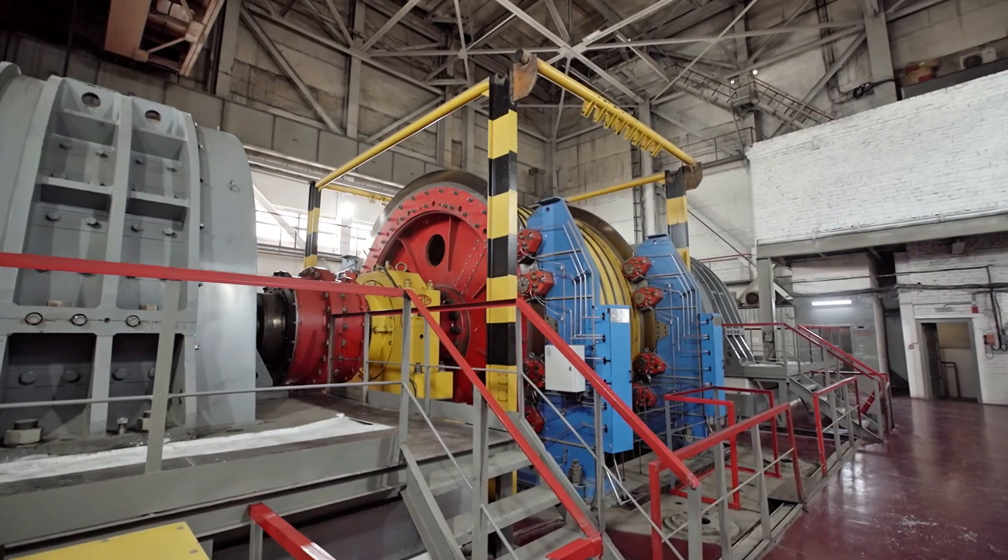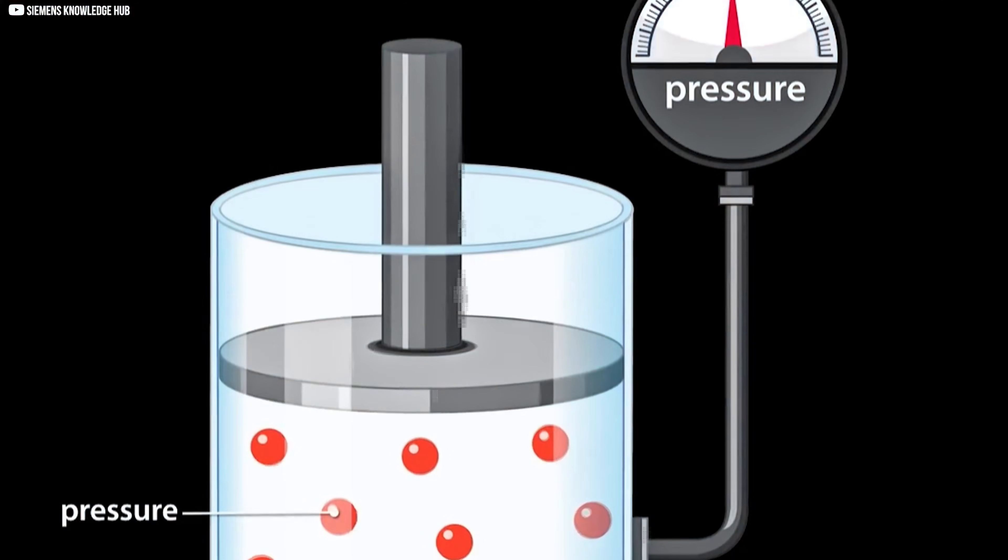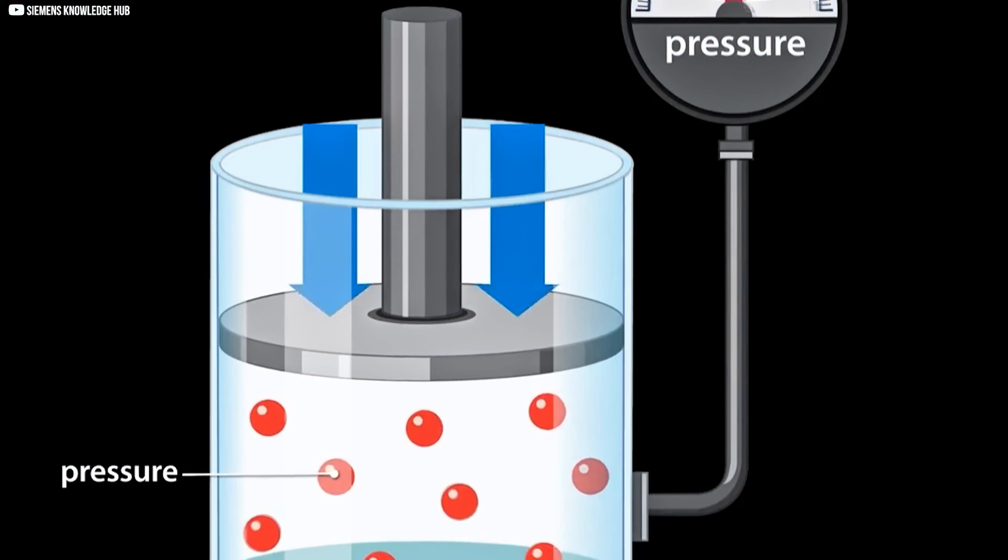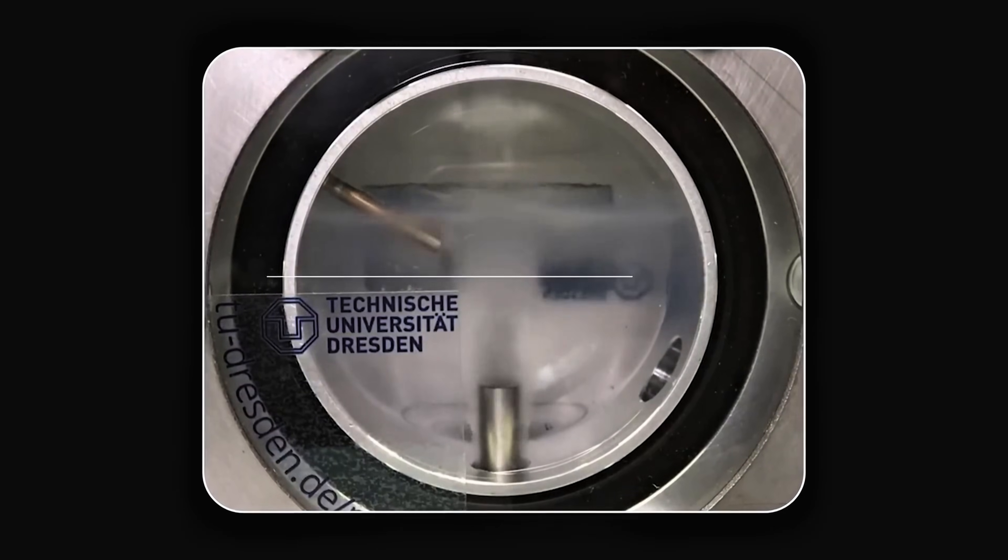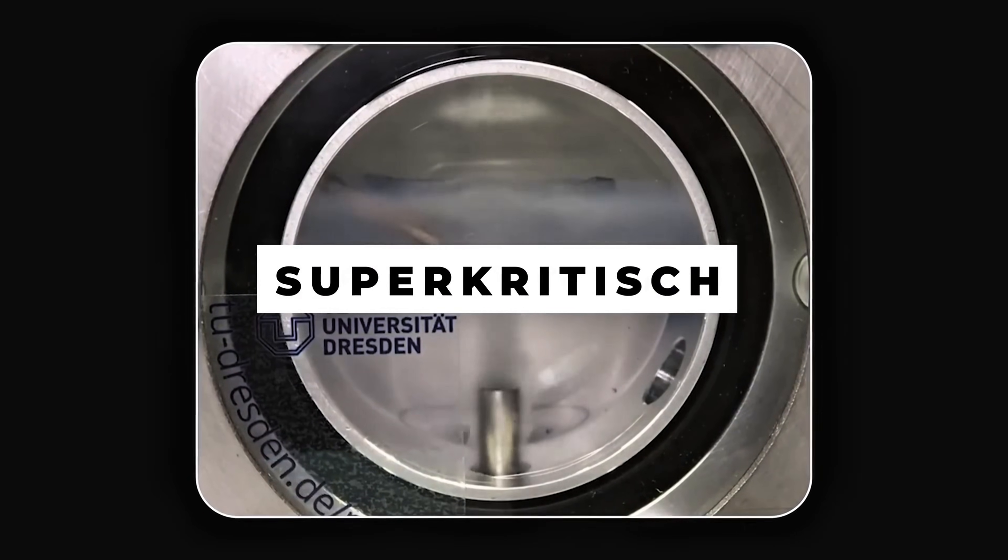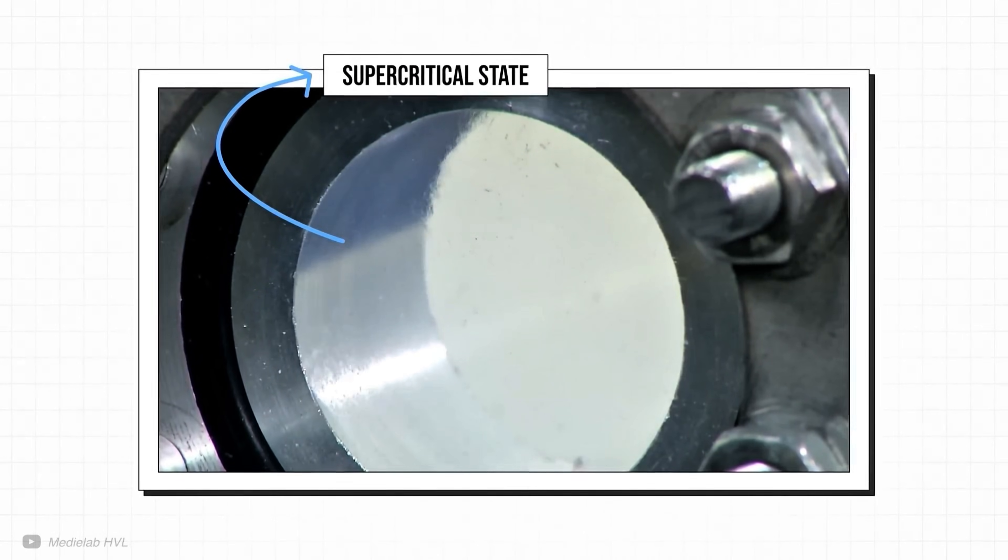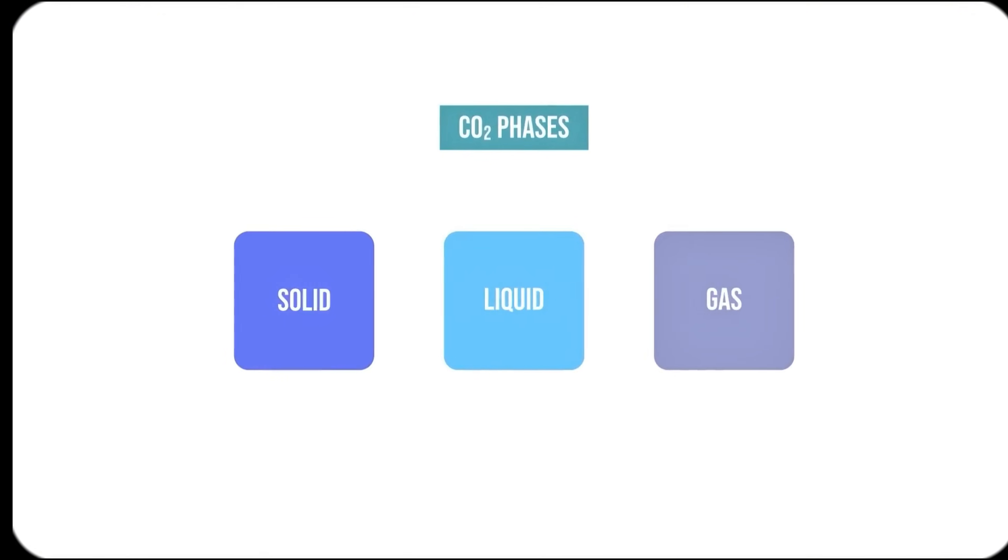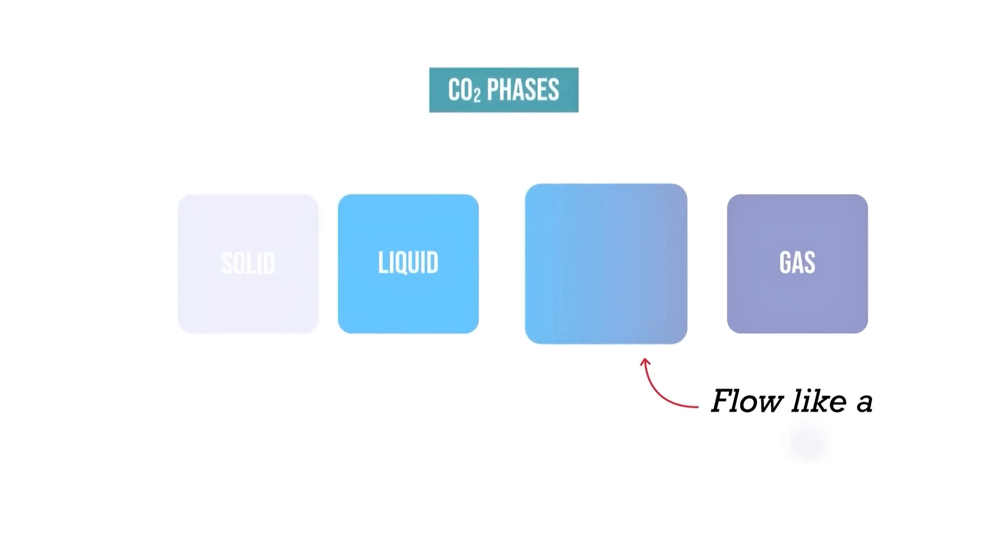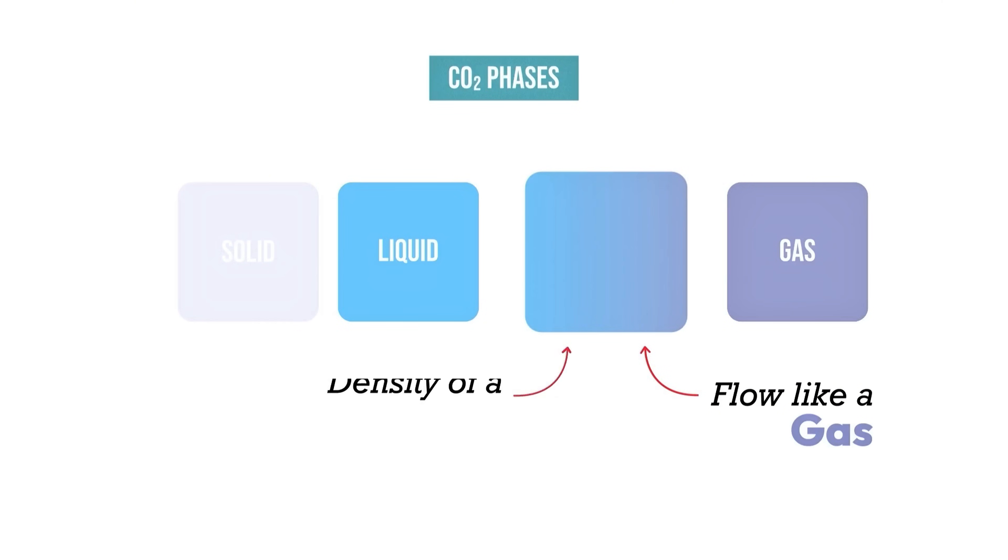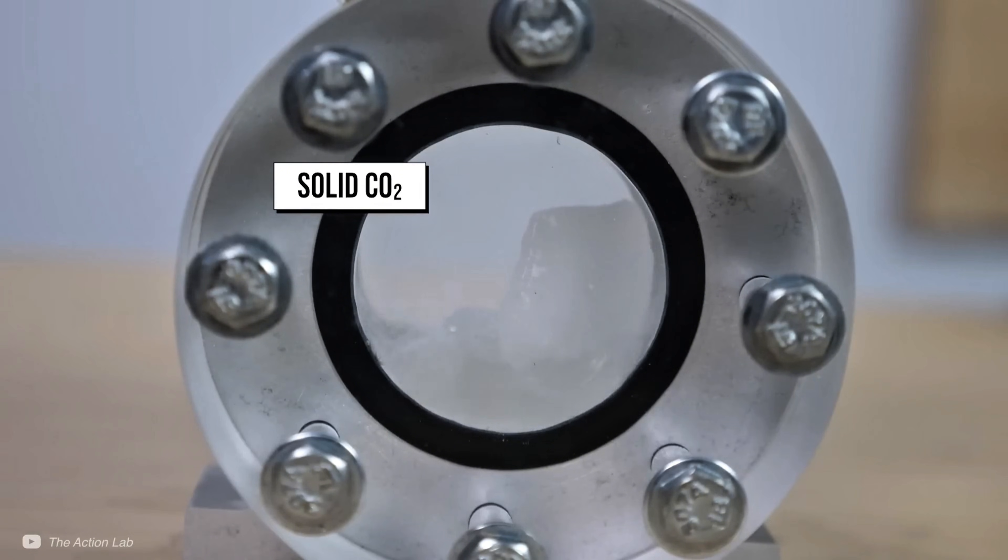Under ordinary conditions, CO2 is a colorless gas, but if you squeeze it above about 74 bar, roughly 1070 psi, and heat it above about 31 degrees Celsius, it enters a supercritical state. In this supercritical phase, CO2 acts like both a liquid and a gas at once. It flows easily like a gas, but carries heat like a liquid. The result is a working fluid that can absorb and deliver more energy than steam ever could.